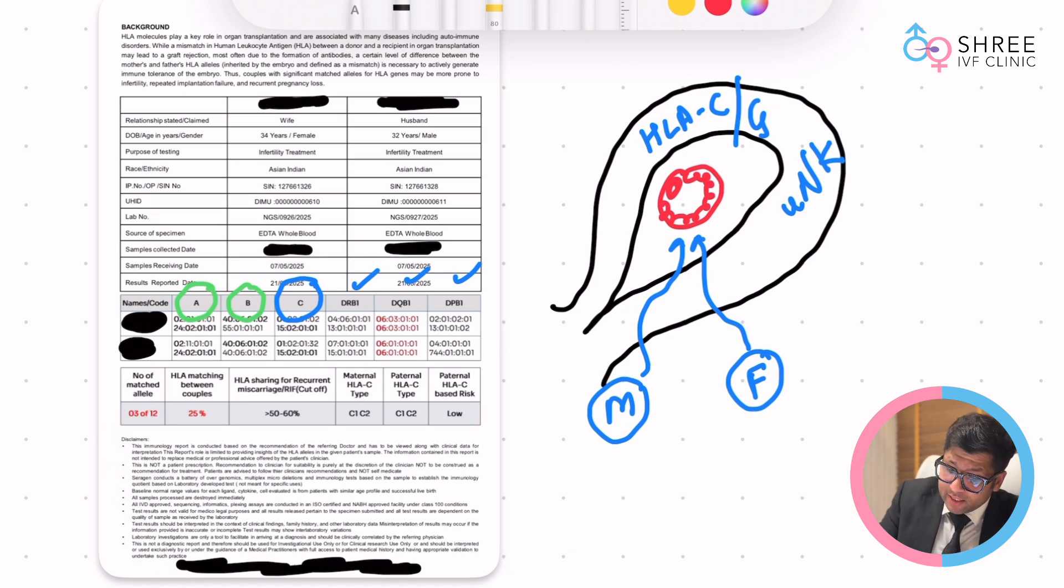Out of all the alleles which we have presented between the couple, we have calculated a total of 12. Number of matched alleles are 3 out of 12. I will just show you how you can easily calculate this. It is very simple, let us try to study it as a small example.